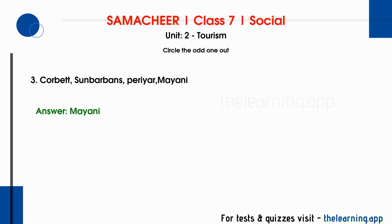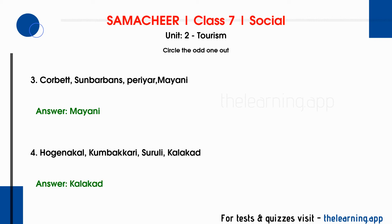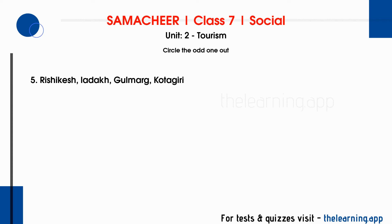Fourth question: Hogenakal, Kalhatti, Kumbakkarai, Suruli, Kalakar — the odd one is identified from the waterfalls list. Fifth question: Rishikesh, Ladakh, Gulmarg, Kothagiri — the odd one out is Kothagiri, as the others are on the north side and Kothagiri is in the south.